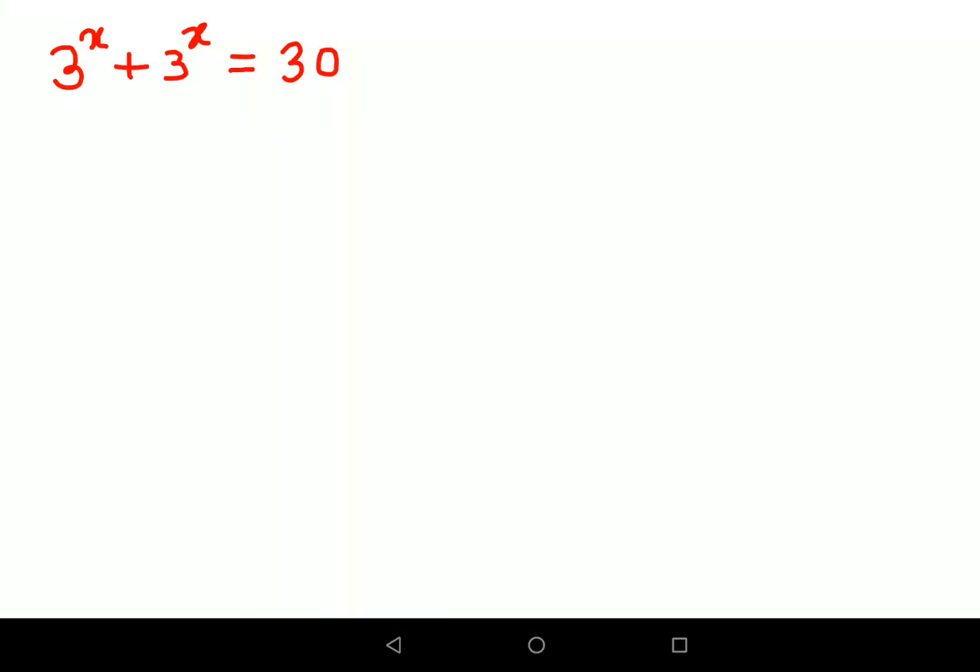Welcome everyone. Today we're going to solve a very nice indices problem which is 3^x + 3^x = 30. In the first step, what we should do is something very basic to all of us. When you add 3^x plus 3^x, you get 2 times 3^x equals 30.